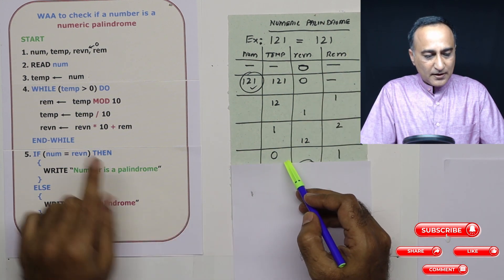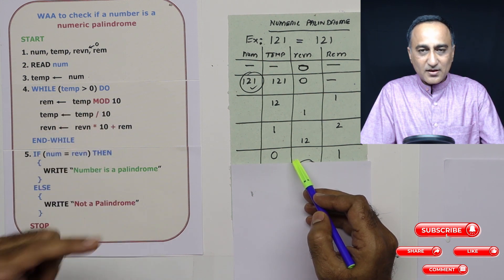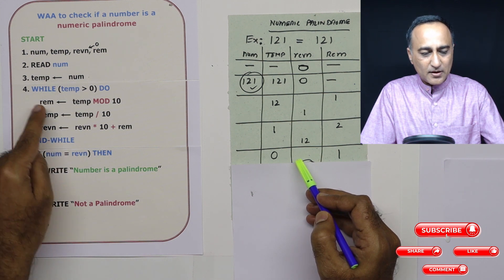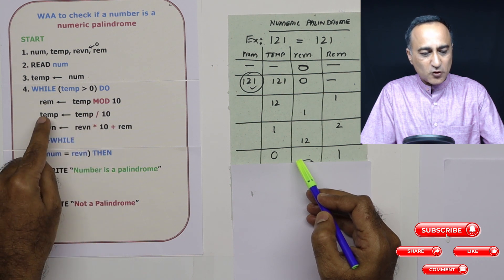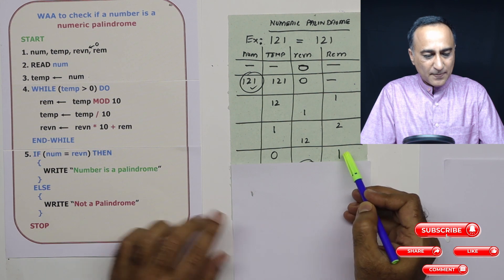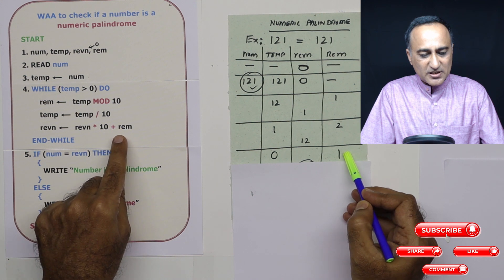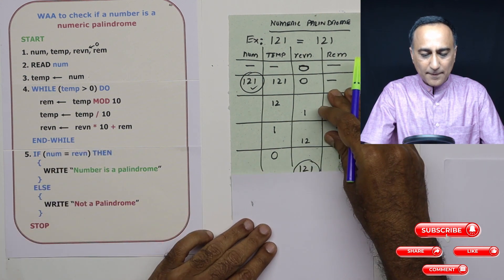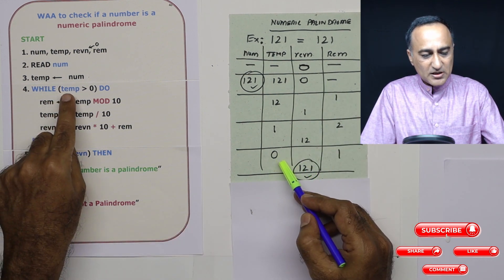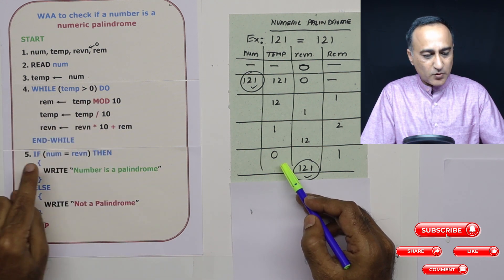Now let's come here. Temp is 1. 1 is greater than zero, true. 1 mod 10—1 cannot be divided by 10, so the remainder is itself. So remainder is 1. Temp is 1 divided by 10. The quotient is zero. So temp has now become zero. Remainder is 1. Reverse number was 12. 12 times 10 is 120. 120 plus the remainder 1. So reverse number now becomes 121. At this point, temp has become zero. Is zero greater than zero? No. So this loop is done executing and I will come here.